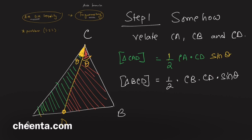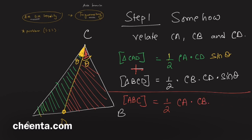If you add these two areas, you get the area of the entire triangle ABC, which is half times CA times CB times sine of 2θ. The angle at the top is θ + θ = 2θ, which is why we have sine of 2θ. This is the area formula of a triangle from trigonometry.